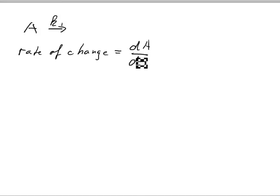So a component A reacts somehow with a rate constant K1. In this case we can say the rate of change can be described as the rate of change in concentration of A, so change of A per time unit.